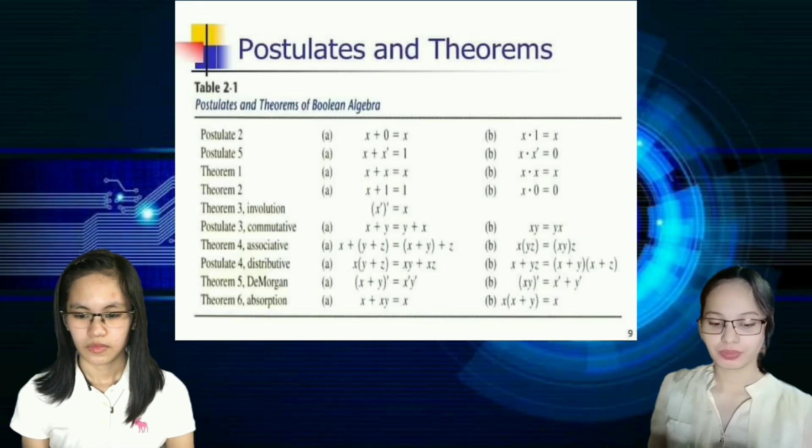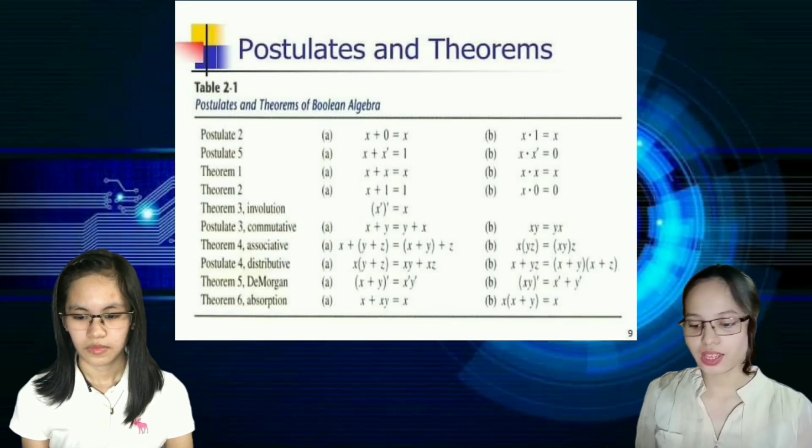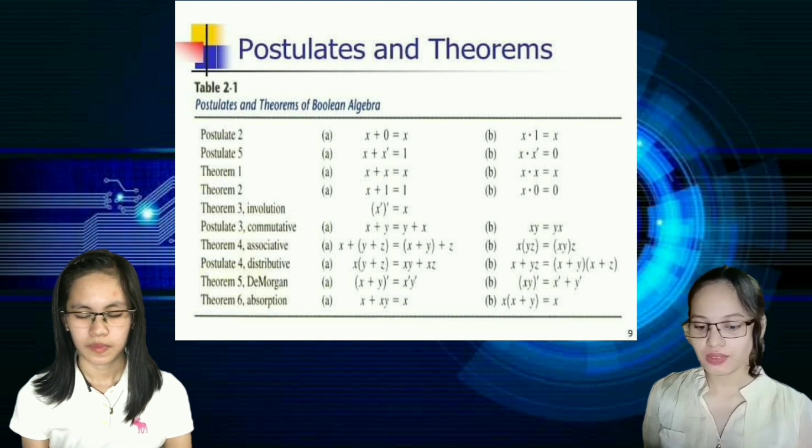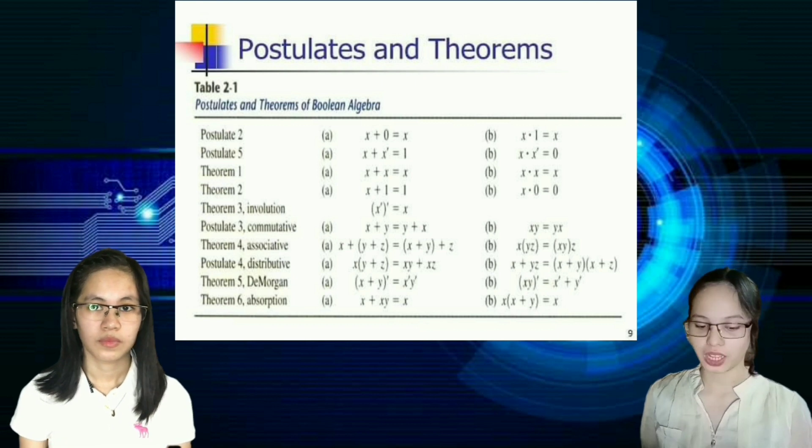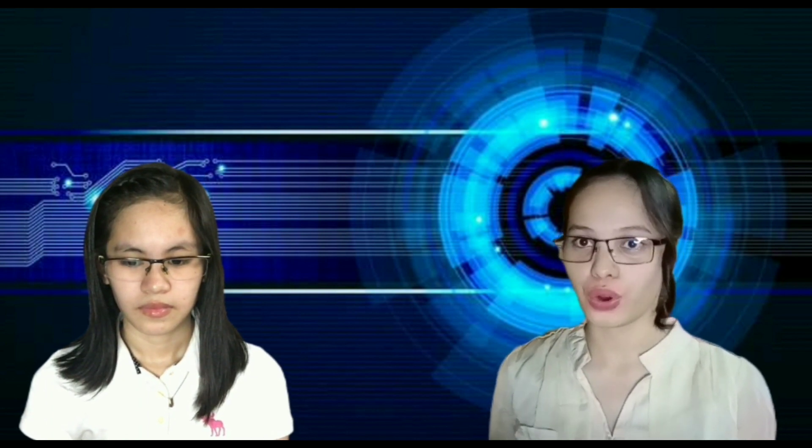What is Boolean Algebra all about? To understand the topic more, here's a set of examples. But first, to support the set of examples that we will solve later on, let's look at this table. This table contains postulates and theorems of Boolean Algebra, where it is divided into two columns — addition and multiplication. But always remember that here in logic, we will not call them addition and multiplication, but rather AND for multiplication and OR for addition.